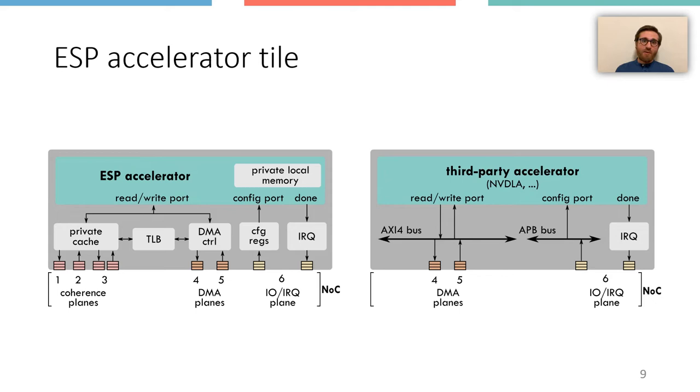At the interface, a third-party accelerator normally has a master bus interface for memory access and a slave bus interface for being configured, and finally also a done signal to notify the CPU when the assigned task has been completed.